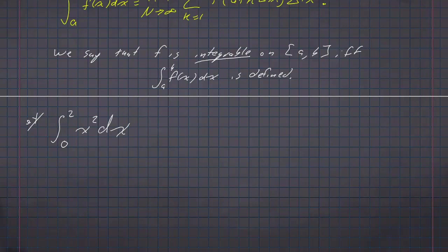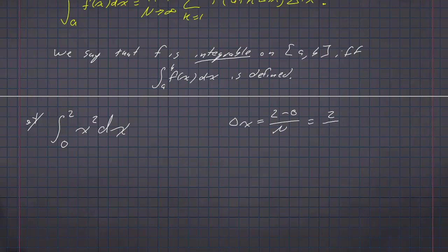This is a problem that we've looked at already. We considered the area bounded below by the x-axis and above by the function f of x equals x squared, and we divided it up into regions in order to calculate the area. So we're not doing anything different now than what we did before, except that we don't have a specific value of n. So I'm going to define my delta x as b minus a, or 2 minus 0 over n, and since I don't know what n is, I leave it as n.